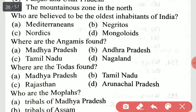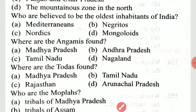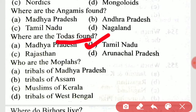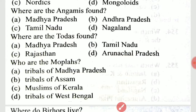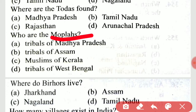Where are the Angami found? They are found in Nagaland. Where are the Todas found? Todas are found in Tamil Nadu. Who are the Mopalas? The Mopalas are the Muslims of Kerala.